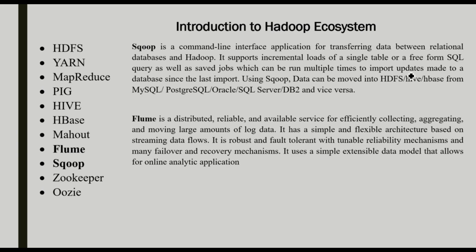Sqoop is a command-line interface application for transferring data between relational databases and Hadoop. It supports incremental loads of a single table and freeform SQL queries, as well as saved jobs which can run multiple times to import updates made to a database since the last import. Supported databases include MySQL, PostgreSQL, Oracle, SQL Server, and DB2 — all relational database concepts. By using Sqoop, we transfer this data into Hadoop.